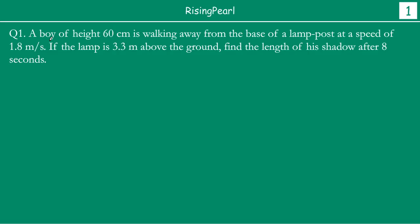So here, a boy or a girl of a certain height, 60 centimeters, is walking away from the base of a lamp post at a certain speed. In this case, 1.8 meter per second. If the lamp is 3.3 meter above the ground, find the length of a shadow after 8 seconds.